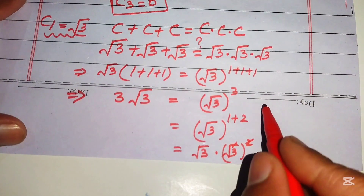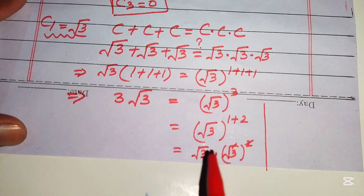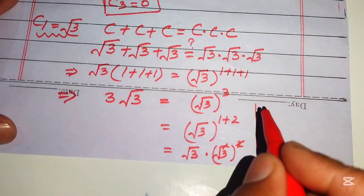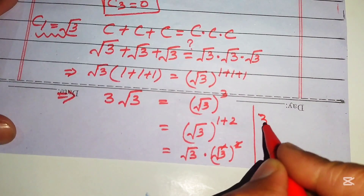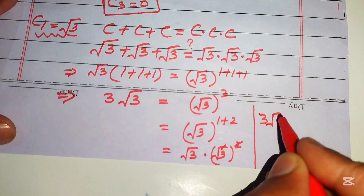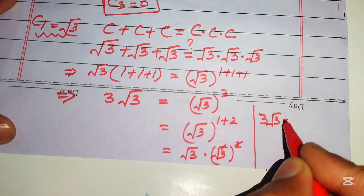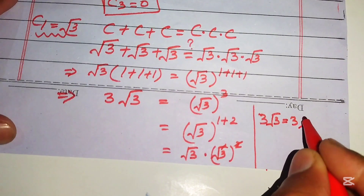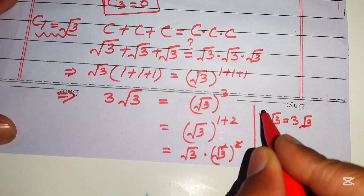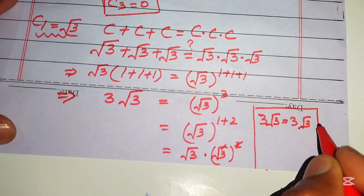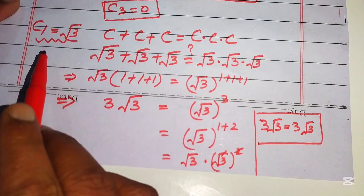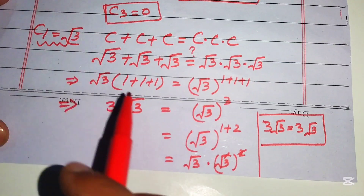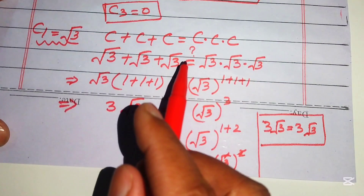The square root squared cancels to give three, so the right-hand side becomes three times square root of three. The left-hand side also equals three times square root of three, confirming that c₁ equals square root of three satisfies the equation.